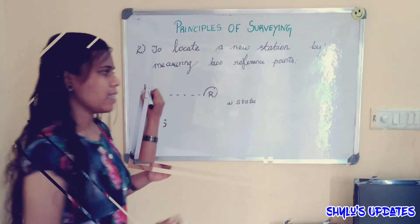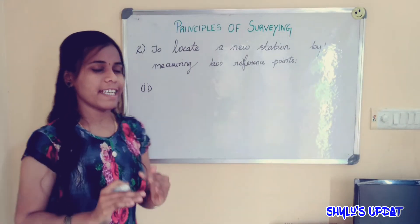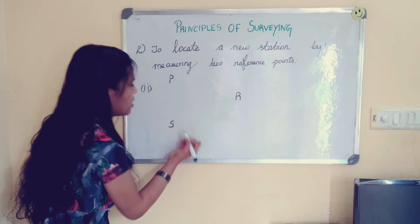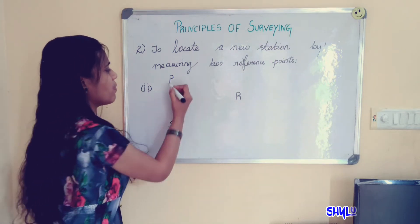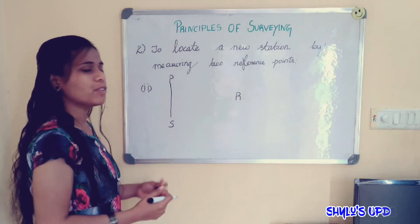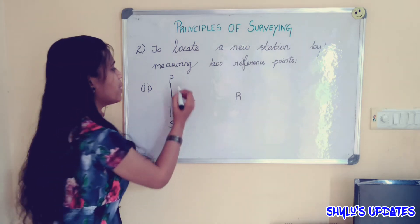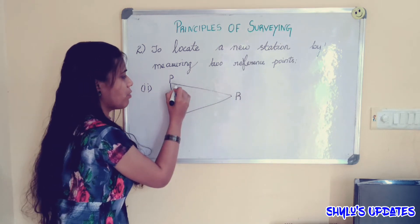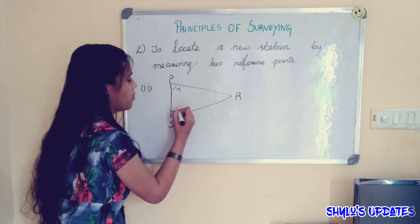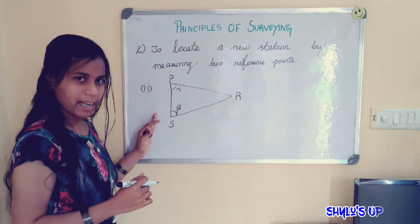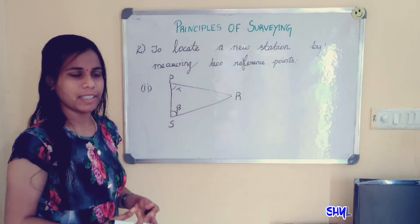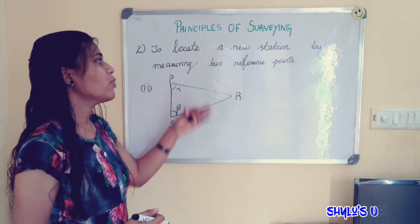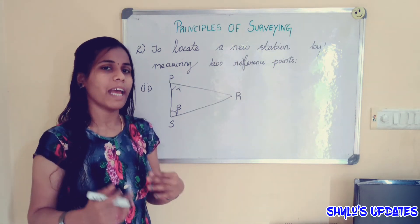Another method is also very easy. Again, the new station name is R. To locate this new station, we need two reference points, P and S. First, we measure the distance between P and S. Next, we measure the angle of distance — the angle between P and R, which is alpha, and the angle between S and R, which is beta. Since we know the distance between P and S and we know the angles alpha and beta, we can easily locate the new station R. The main point is: we have to locate a new station by measuring two reference points. That is the second principle.